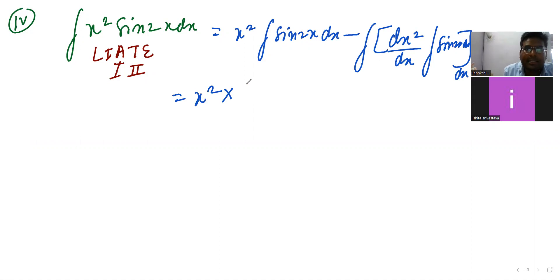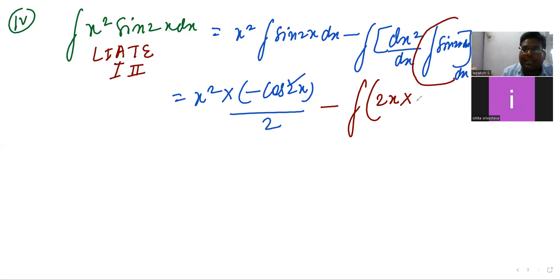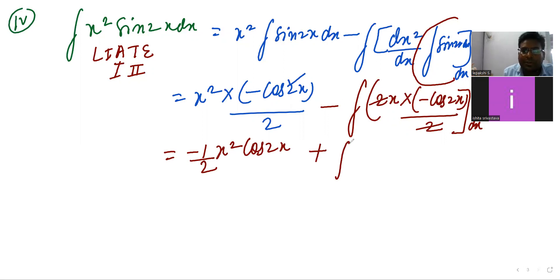This will be x² times — sin integration is minus cos(2x), and in integration we divide by the coefficient, so coefficient 2 gives minus cos(2x)/2. Minus integration: differentiation of x² is 2x, and this part we just integrated as minus cos(2x)/2, so the 2s cancel, whole dx. Arranging: it will be minus (1/2)·x²·cos(2x), and minus minus becomes plus, giving plus integration of x·cos(2x) dx.